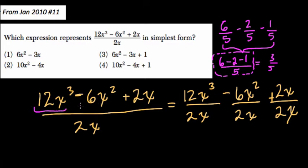That's the fraction that they are in terms of, so they're each being divided by 2x, kind of like each of these were being divided by 5. So what does that mean? Well, in the first term, we have 12x to the third over 2x.